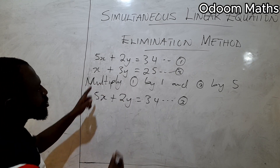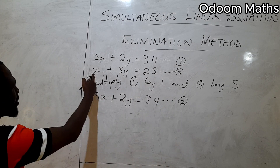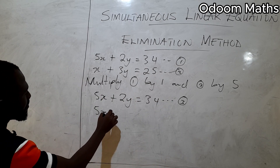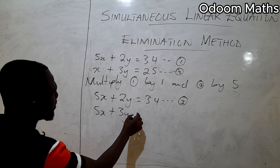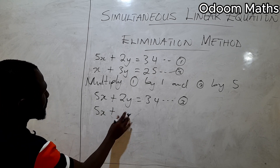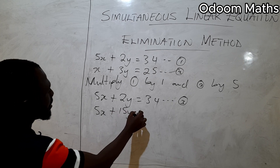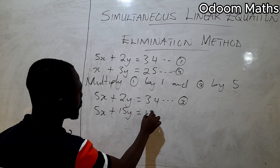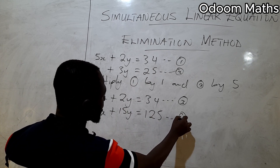Multiplying equation 2 by 5 gives us 5x plus 15y equals 125. Call this equation 4.